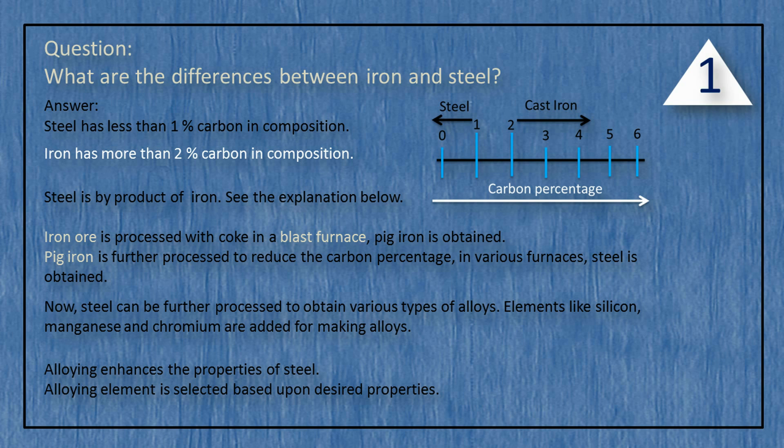Steel can be further processed to obtain various types of alloys. Elements like silicon, manganese, and chromium are added for making alloys.